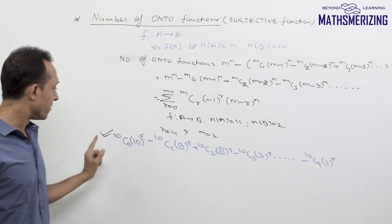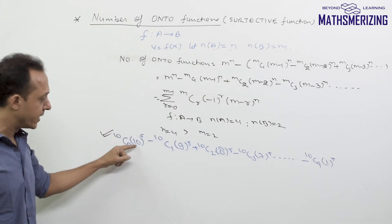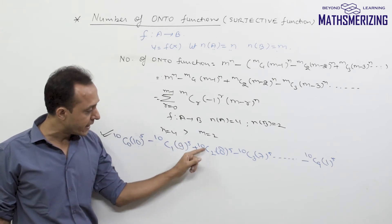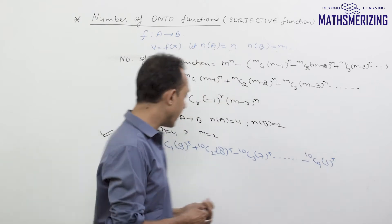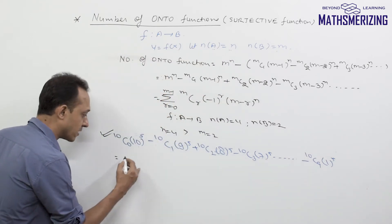The problem was similar to this one: 10C0·10^5 minus 10C1·9^5 plus 10C2·8^5 and so on up to 10C9·1^5. If I write it in summation form,